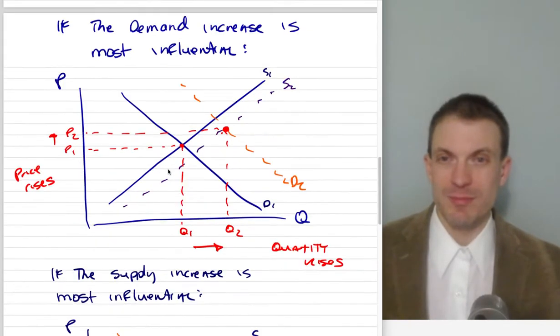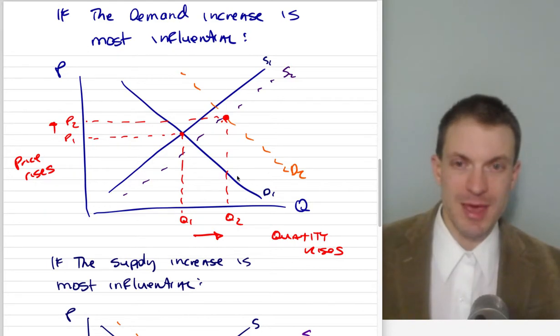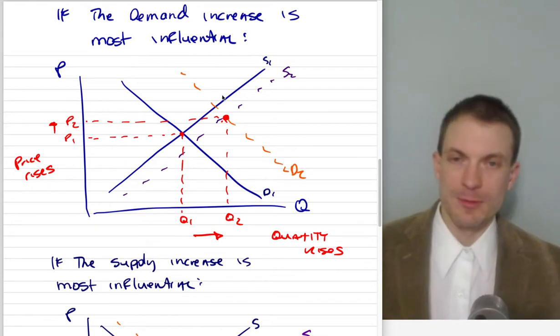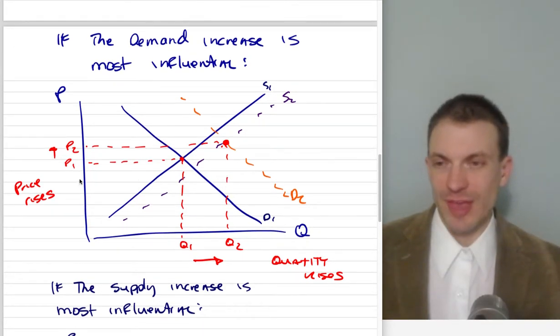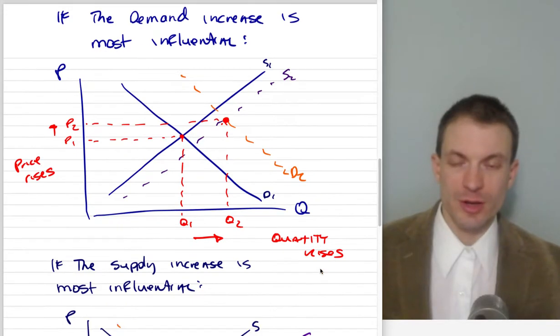If demand is most influential, I'm going to sketch out the supply and demand model with a large demand shift and a relatively small supply shift. Both are shifting to the right. We have an increase in demand due to consumer interest in these scooters and an increase in supply due to falling battery costs. We notice the price rises. So if demand is most influential, price rises and quantity rises.